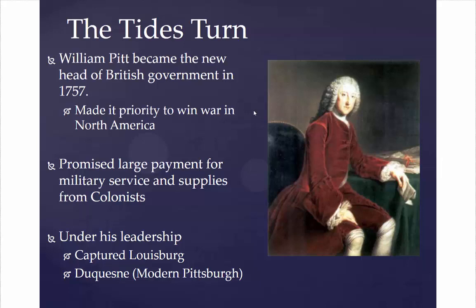It took two years for a new person to come to the head of the British government in 1757 — William Pitt. He made it a priority for the British to win this war in North America. One way he did this was by promising the colonists large amounts of monetary compensation for serving in the military or providing supplies, since colonial resources like lumber and tools for war were already there. It made more sense to buy them from the colonists for the war effort. Under his leadership, the British got wins at Louisburg and again at Fort Duquesne — modern-day Pittsburgh.